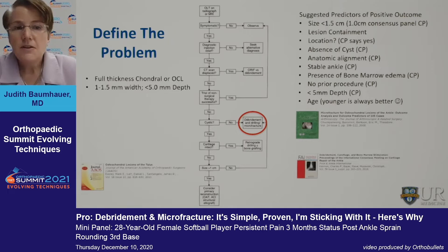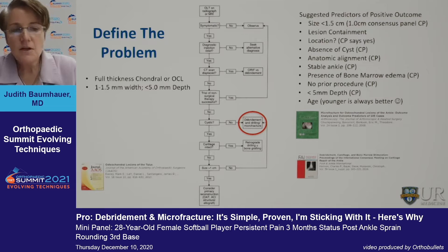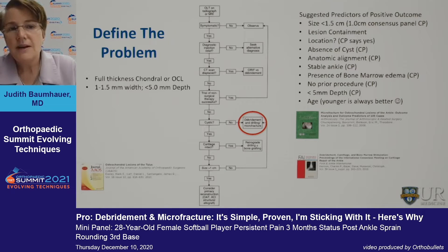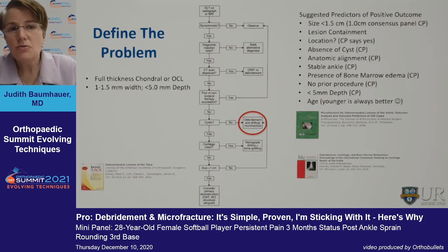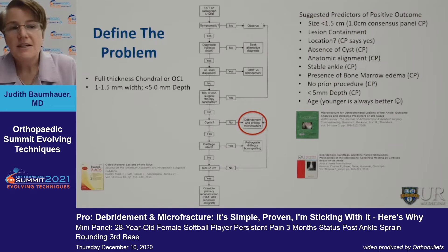The figure you see in the center is a picture from Mark Easley and Dan Latz. They tried to define an algorithm for osteochondral lesions, and I refer you to this as it really walks you through some of the factors that are important in thinking about an osteochondral lesion.